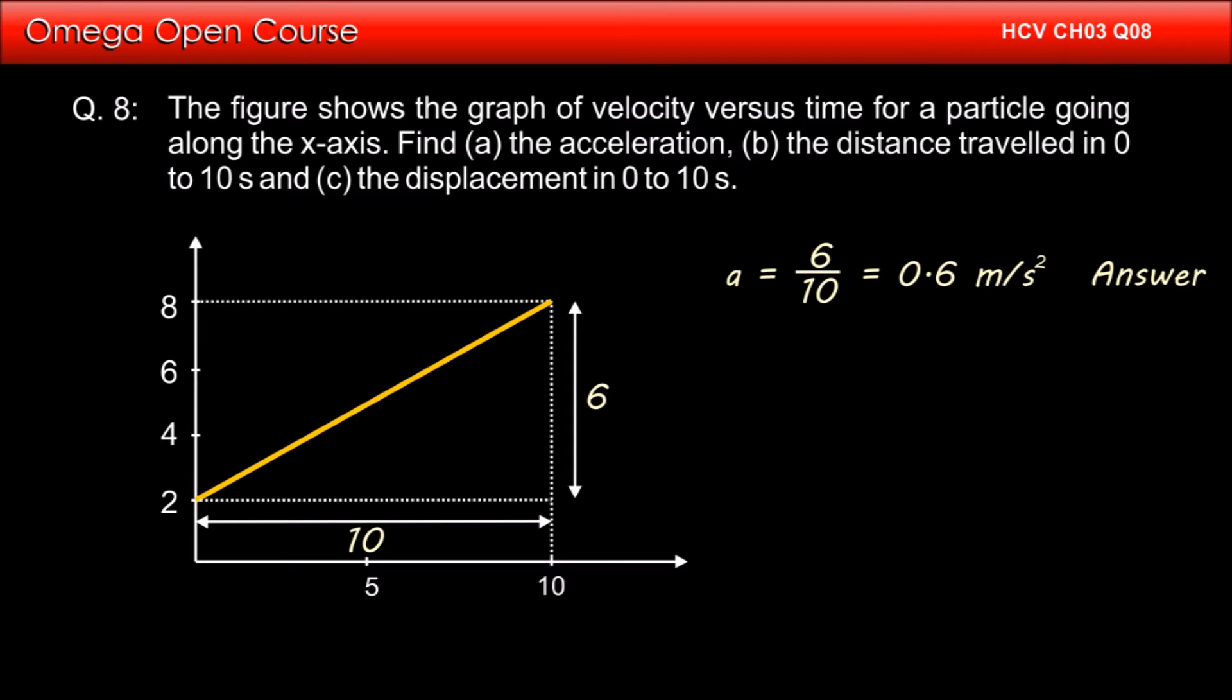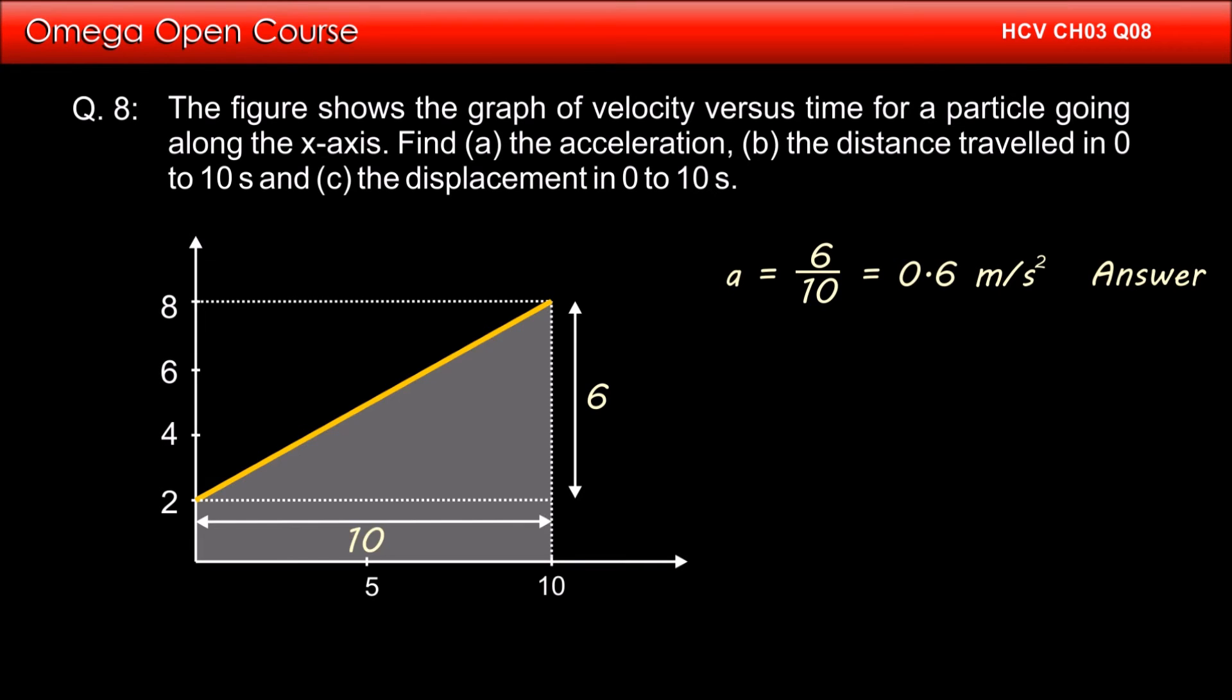In a velocity-time graph, displacement is equal to the area under the graph. Therefore, displacement in this case is the area of the shaded region.